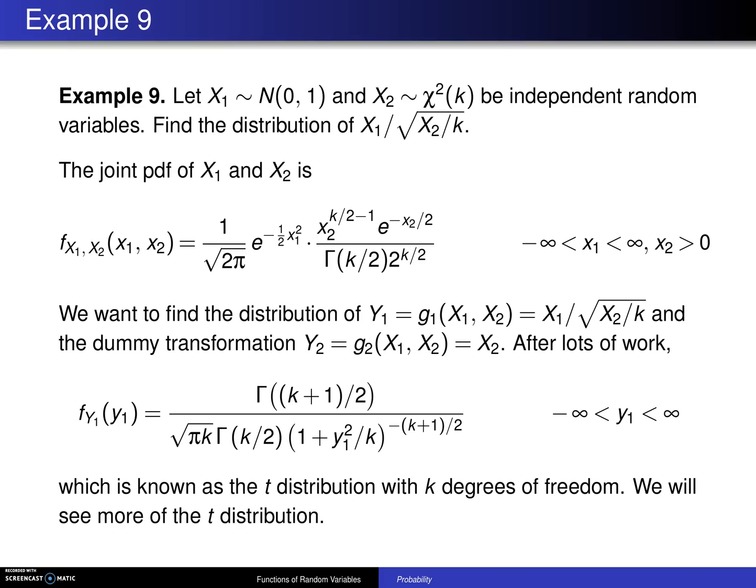Here is a second example of using the transformation technique on two continuous random variables. This one leads to a very famous distribution. Here's how it goes.